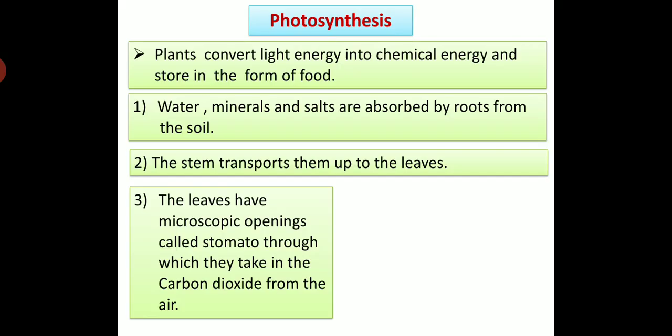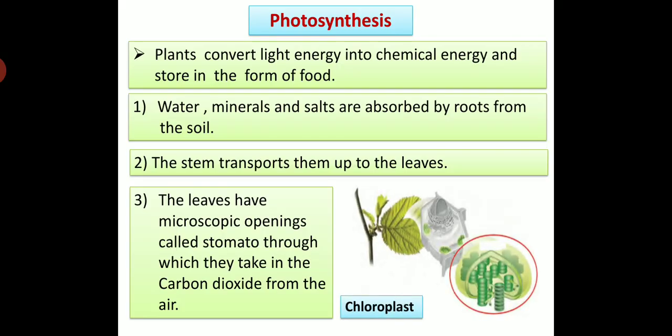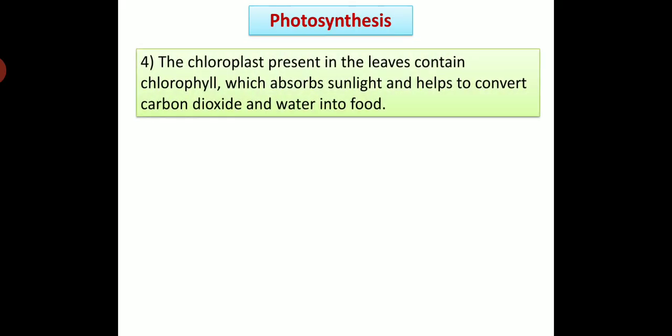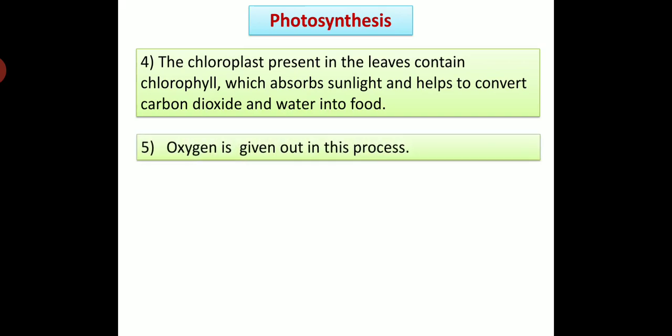The leaves have microscopic openings called stomata through which they take in the carbon dioxide from the air. Now look at this diagram. You can see that chloroplast is present in leaves of the plants. The chloroplast present in the leaves contain chlorophyll, which absorbs sunlight and helps to convert carbon dioxide and water into food. Oxygen is given out in this process.